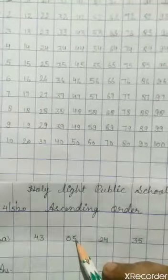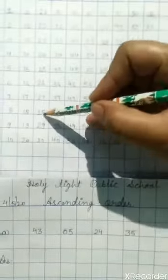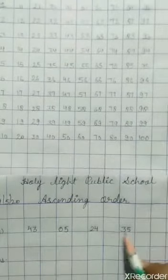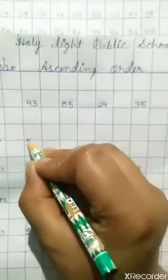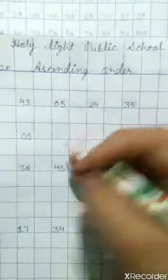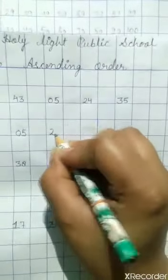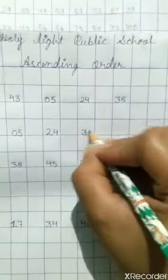So first we have here counting. We see which one is the first line. One key line - we have 05. Two key line - we have 24. Three key line - we have 35. So we have to write first we have to write 05, then 24, then 35, and then we have 43.